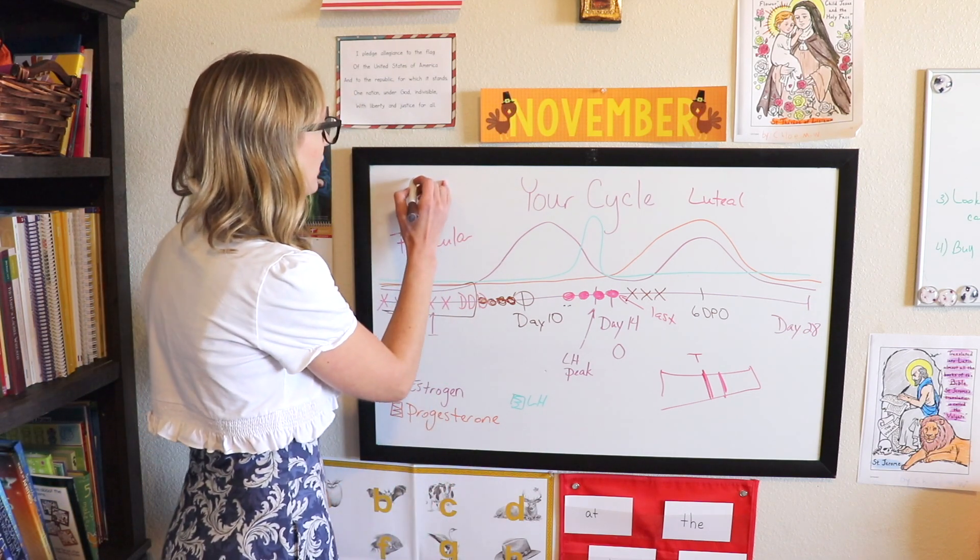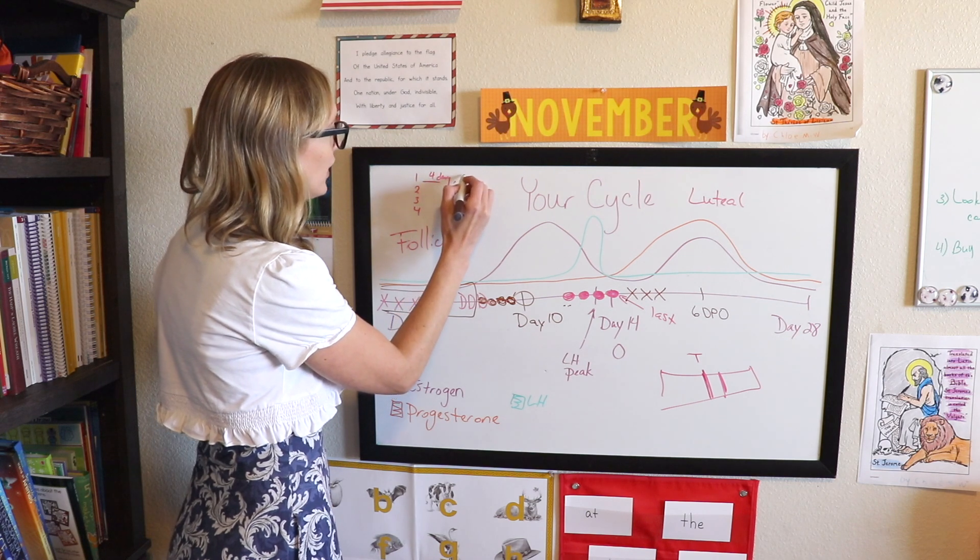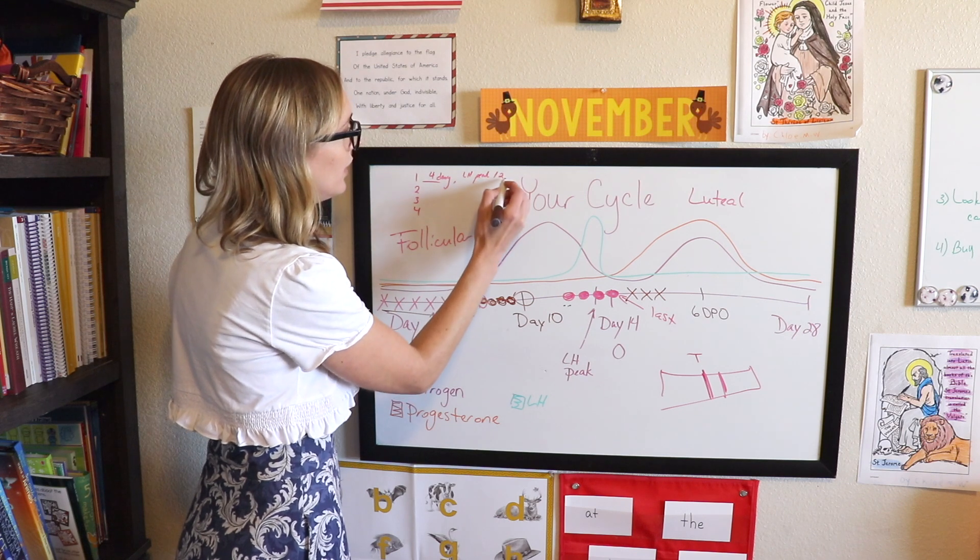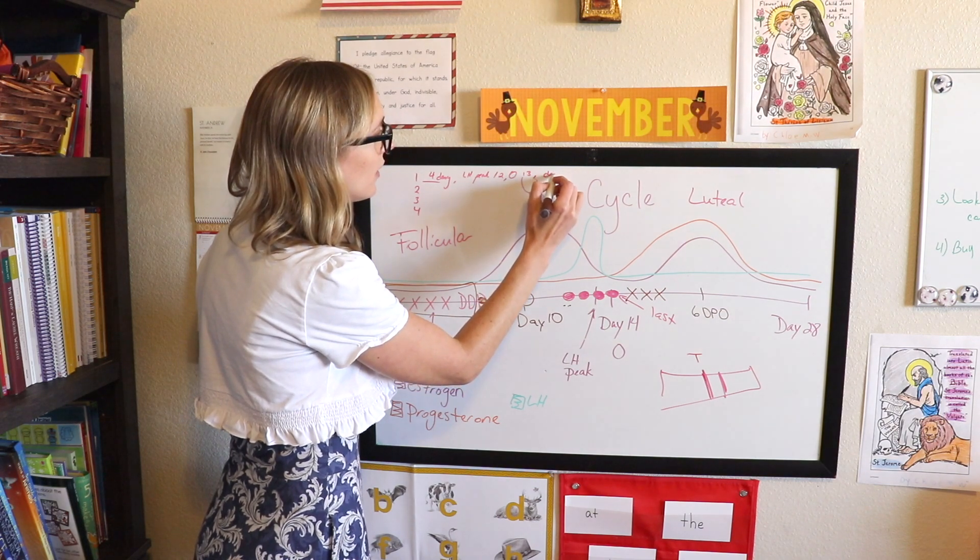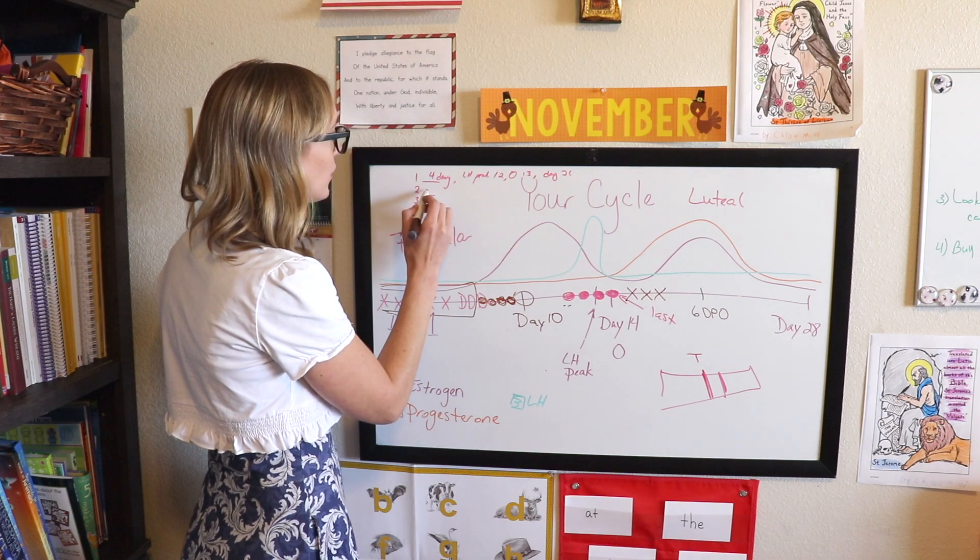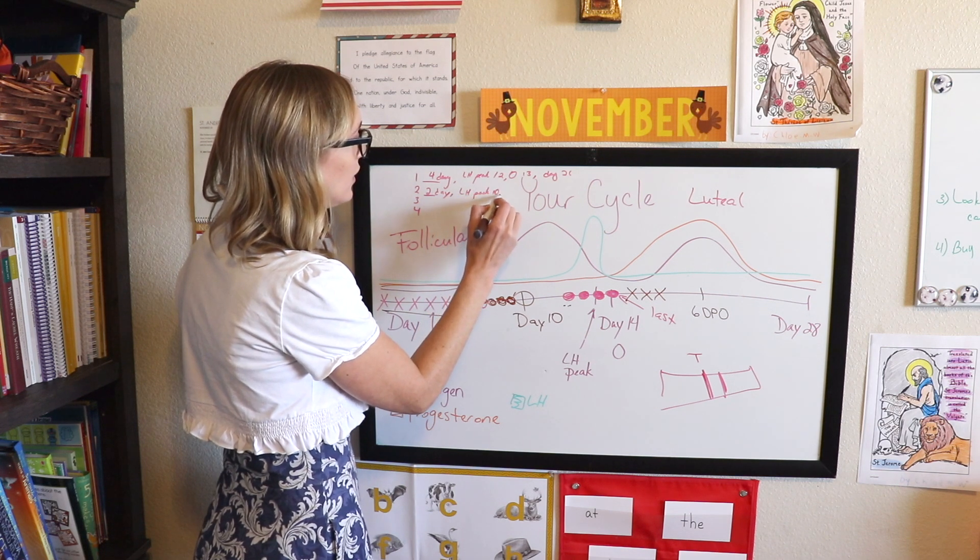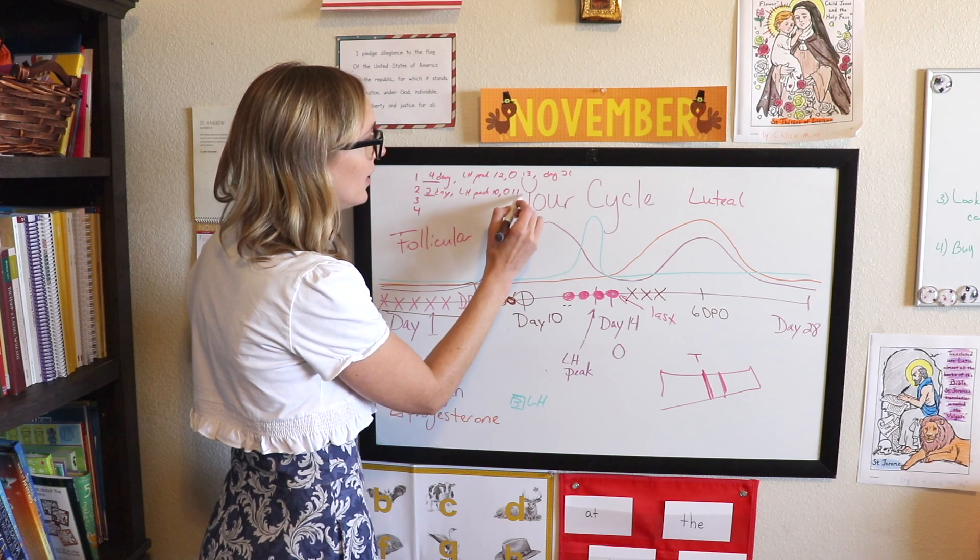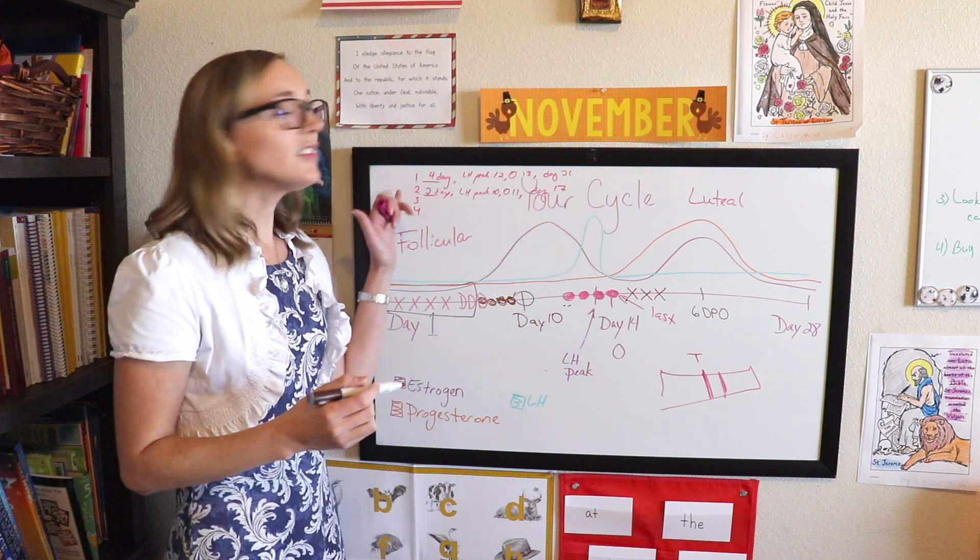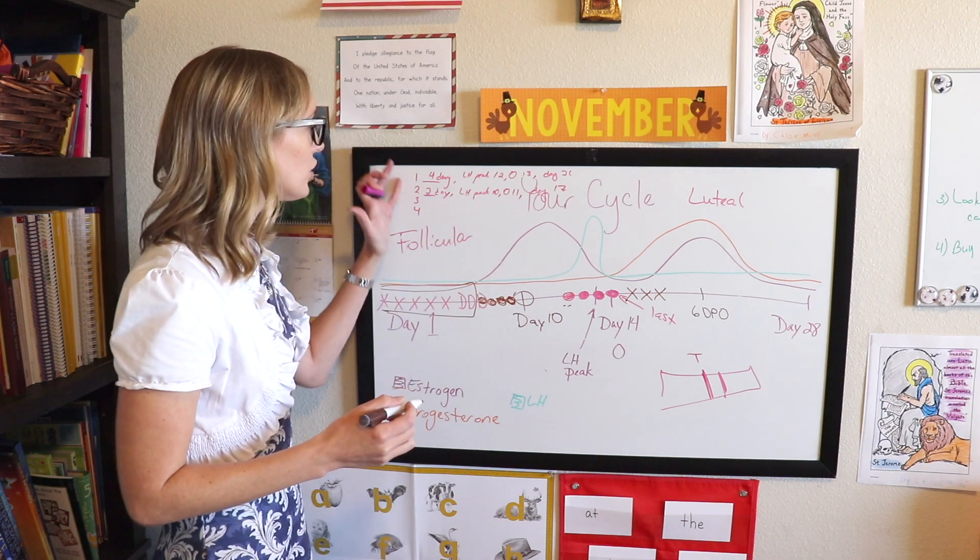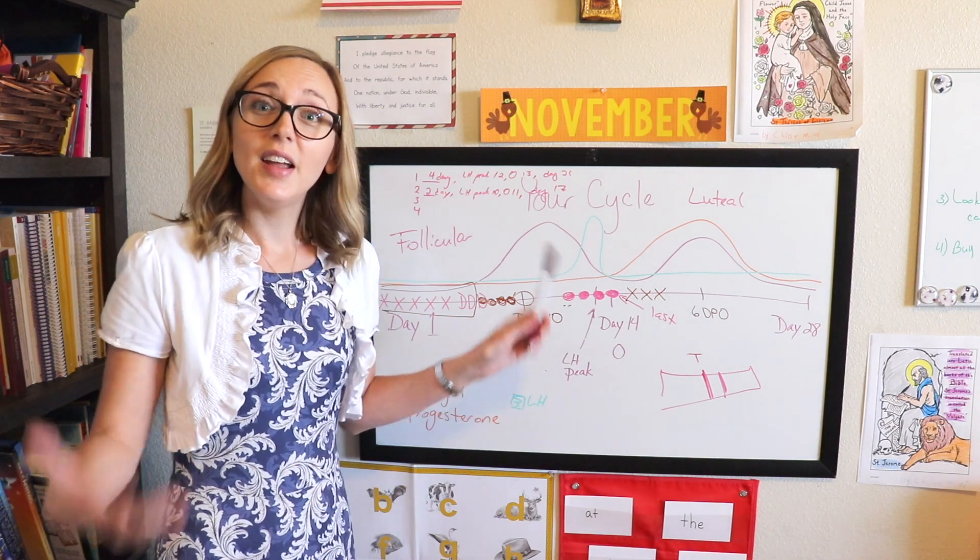And then what you do is you take this to your doctor if you have any concerns. Say you track for four months, you know, this month you had a four day cycle, you ovulated, you got your LH peak day 12. So you ovulated, let's say day 13. And then you had your period on day 26. But then say the next cycle, you only had two days of your period, you got your peak on day 10. You think you ovulated day 11. And then for some reason on day 17, you got your cycle. That's concerning. And you would want to go to the doctor, but you're only going to know that if you take some data on your health on your body. This is science. And this is information. And this is important information.